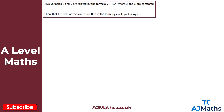For practice question one, we have two variables x and y related by the formula y equals ax to the power of n, where a and n are constants. We need to show that this relationship can be written in the form log y equals log a plus n log x. Starting with y equals ax to the power of n, we take logarithms of both sides. On the left we get log y; on the right we get log of ax to the power of n.